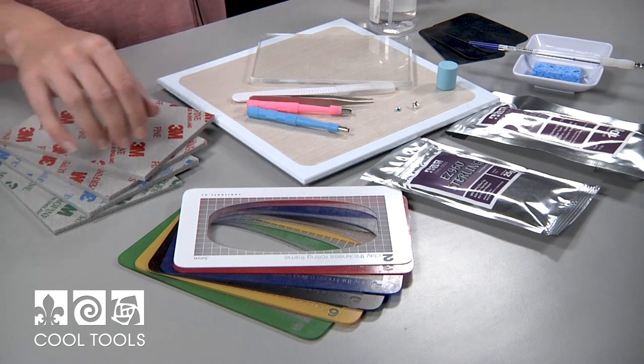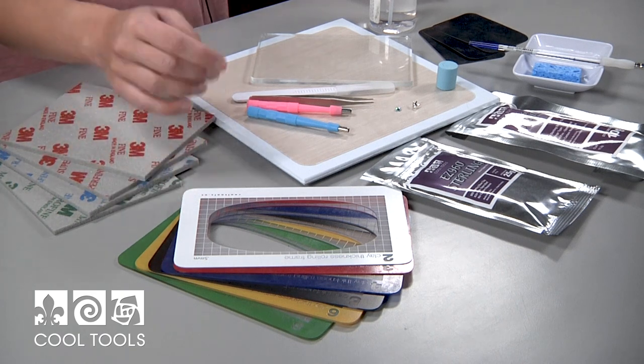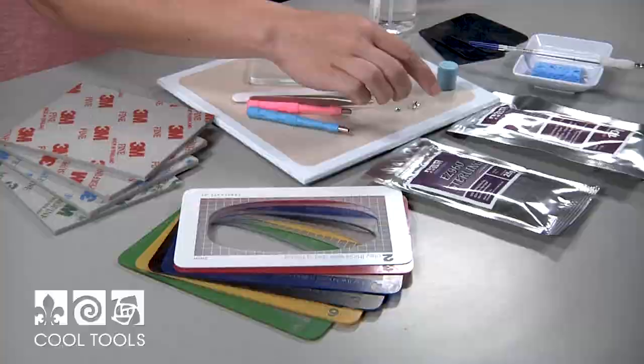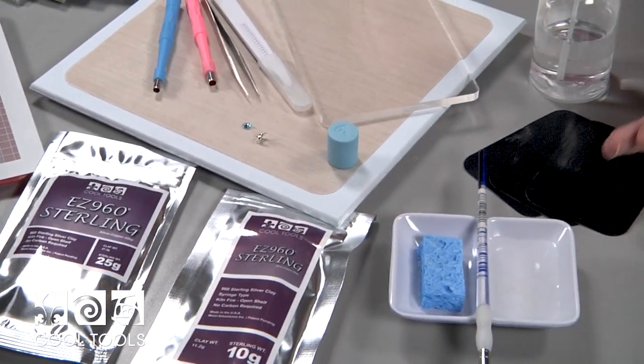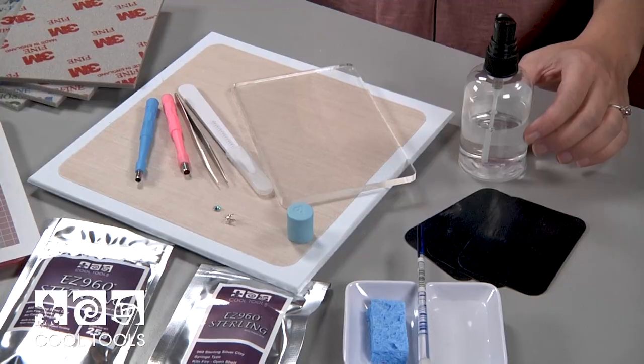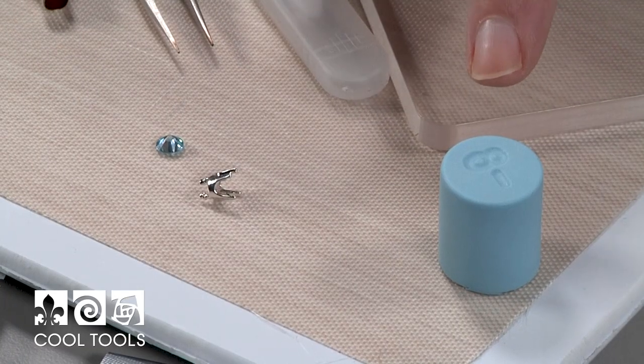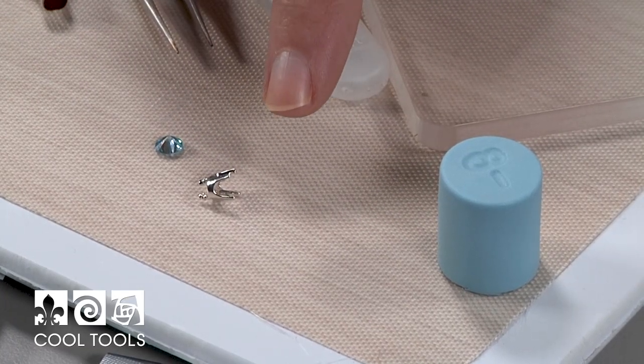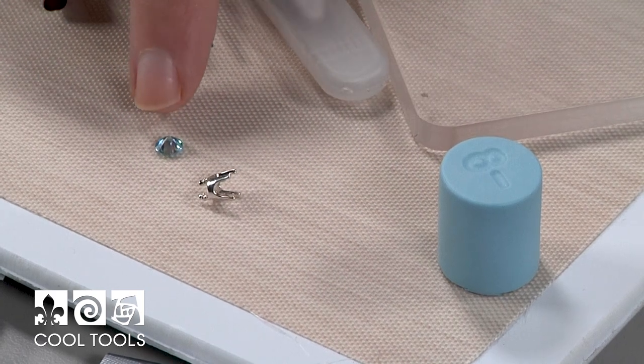Sanding pads, clay thickness rolling frames, and EZ960 lump and syringe clay. A wick away with a brush, some tough cards, cool slip, a silicone ring mandrel, and a five millimeter snap setting with corresponding stone.